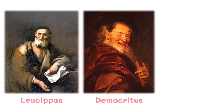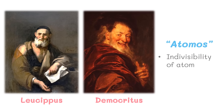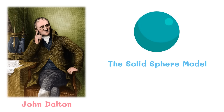Greek philosophers Leucippus and Democritus proposed early on the concept that the smallest particle of matter is an atom that is indivisible. Democritus coined the term 'atomus' to describe the indivisibility of an atom. John Dalton proposed the atomic theory of matter in 1803 and pictured the atom as a solid, indestructible sphere with a mass — like a billiard ball.